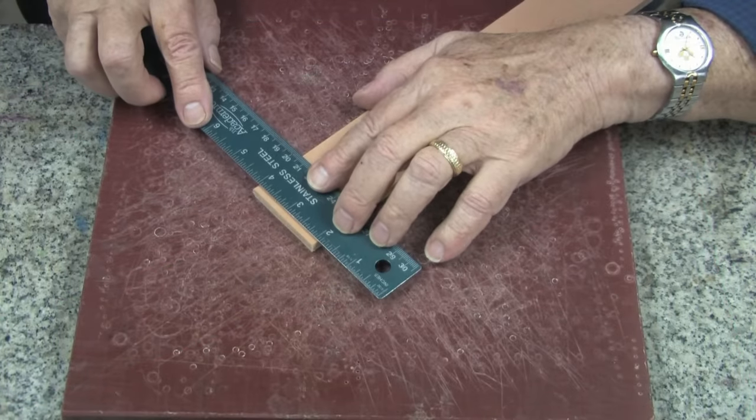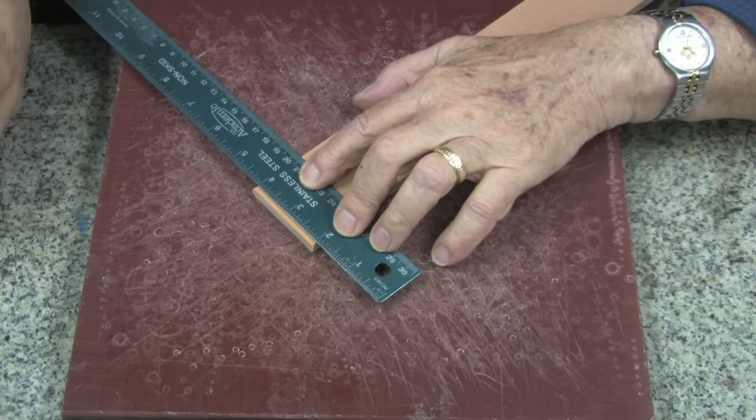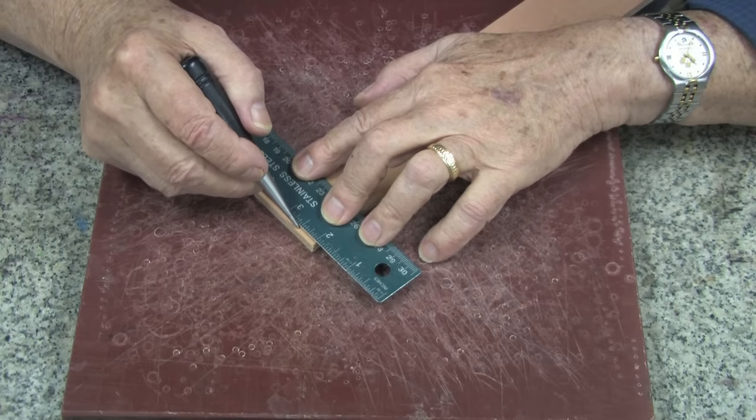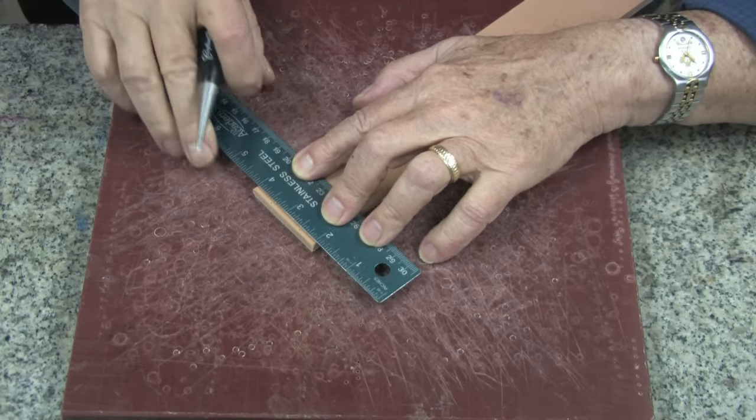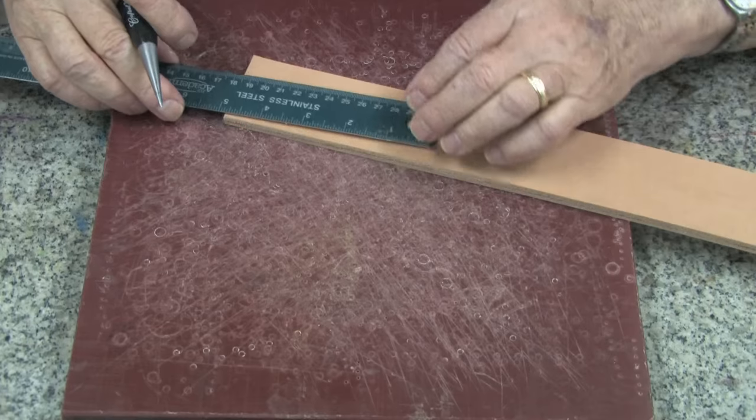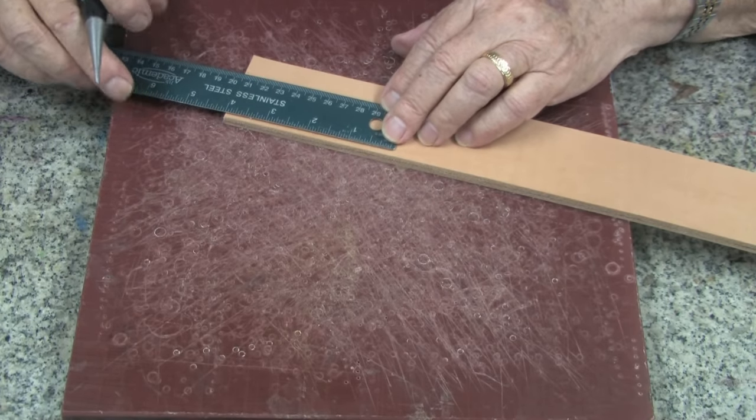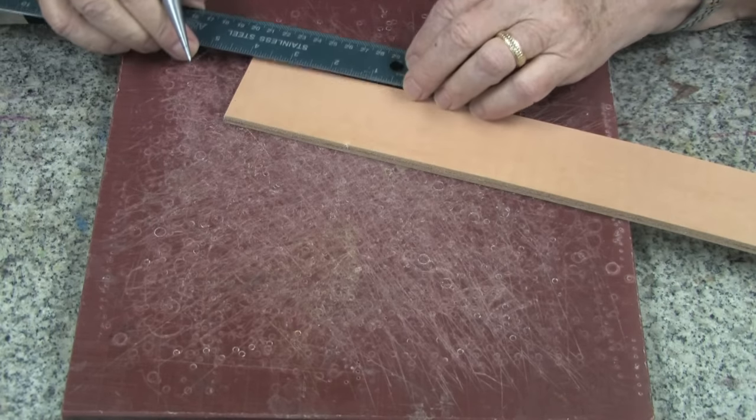Next, I will take a ruler and I want to taper this two inch form down to one inch. So I'll just make a mark a half inch in from both sides. Now I'll make another mark about three inches down, and I'll do that on both sides as well.